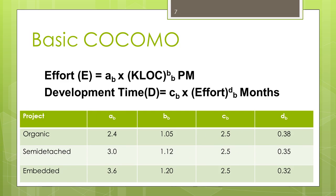This is the constant table for basic COCOMO. Development time is the estimated time to develop the software, expressed in months. Effort is the total effort required to develop the software product, expressed in person-months — person-month is the unit of effort, and months is the unit for development time.